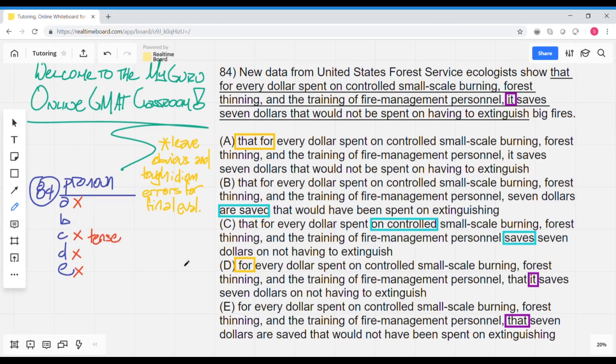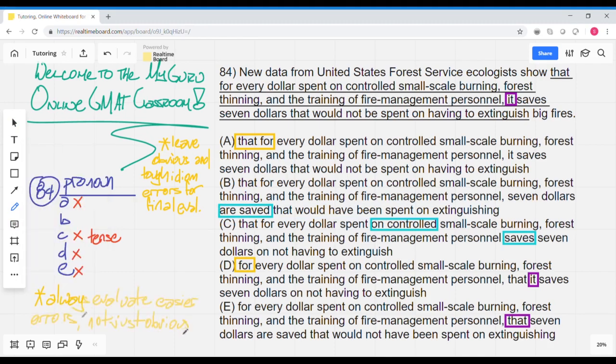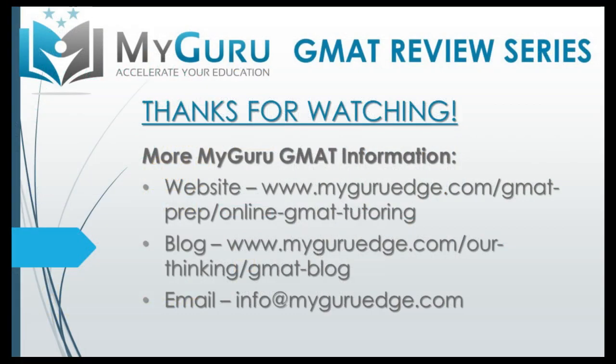And we then reread choice B, and we see that new data from United States Forest Service ecologists show that for every dollar spent on controlled small-scale burning, force thinning, and the training of fire management personnel, $7 are saved that would have been spent on extinguishing big fires, and everything makes logical sense there. You capture the intended meaning, and we see that one of the bigger issues here is always evaluate easier errors, not just the obvious ones.